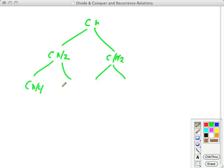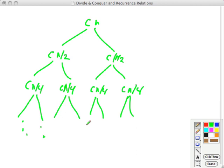I'll just redraw it here, where we have Cn at the root level, and then we divide into problems of size n over 2, Cn over 2, and then we divide them into subproblems of Cn over 4, and so on, down into where the subproblems are all of size 1, so it's just Cs all the way across.